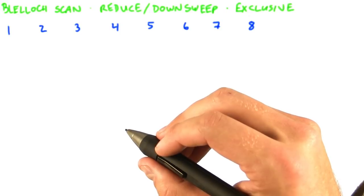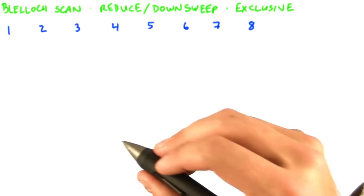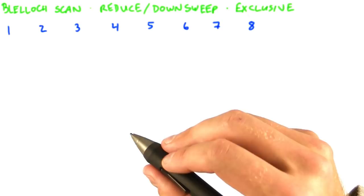So a Hillis and Steel scan is fairly efficient. It's actually the first scan to be implemented on GPUs. Guy Blelloch popularized another formulation of scan in 1990, however, that is even better at work efficiency. It's a little bit more complex in terms of the algorithm, though.